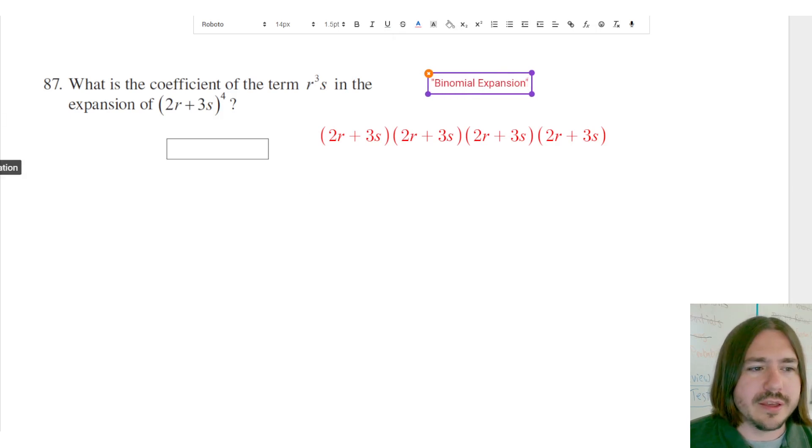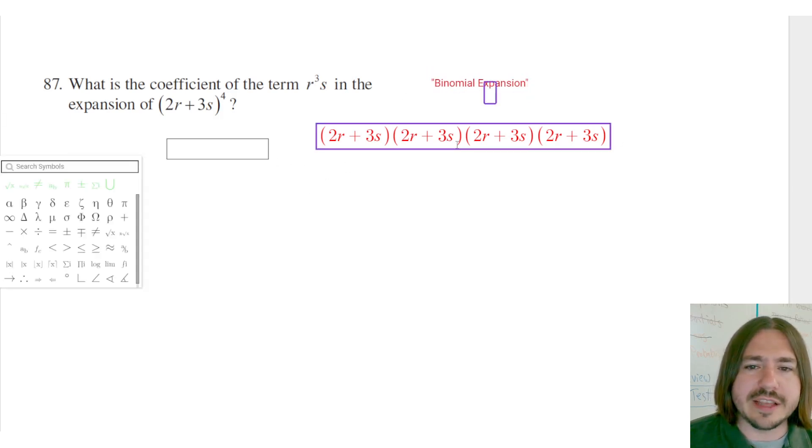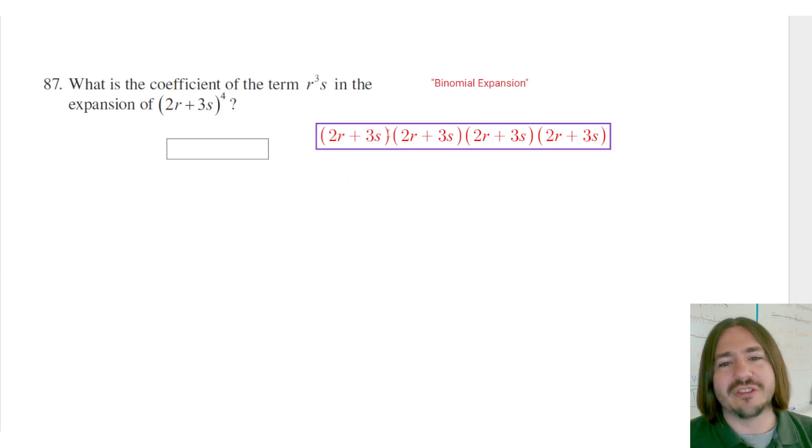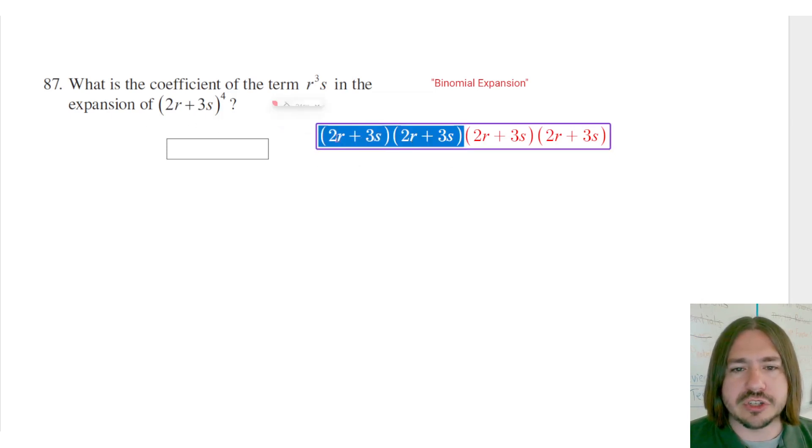But yeah, so anyway, I'm going to take this the long way, the slow and steady way. The turtle wins the race here. So this way you don't have to actually memorize some rules for how to actually multiply this out. I'm going to multiply just two at a time.